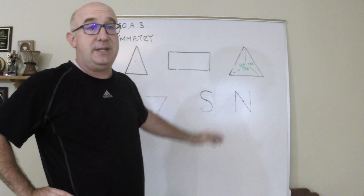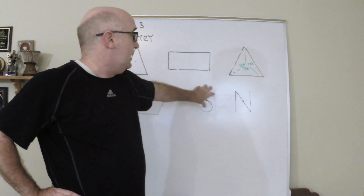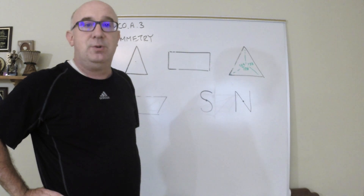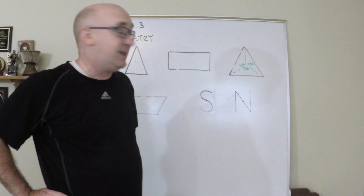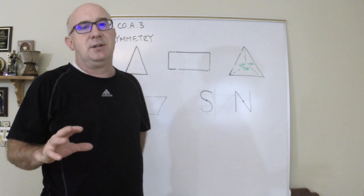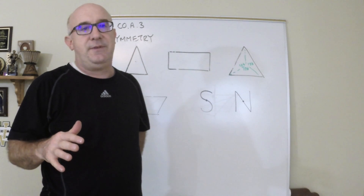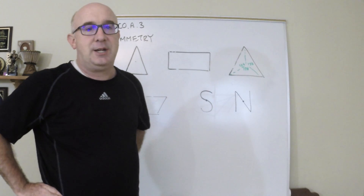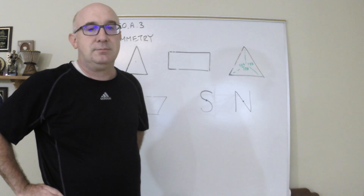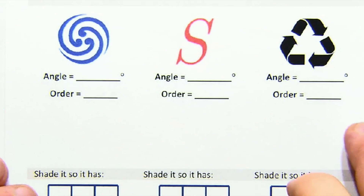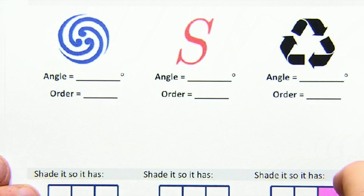Lots of the letters in our alphabet have rotational symmetry. This S, if we rotate it at 180, would have a rotational order of two and map onto itself. The N would as well, and so on. We'll take a look at some specifics about rotational symmetry under the document camera.